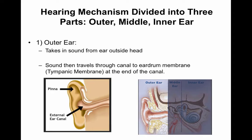The outer ear takes in sound from outside the head. Sound then travels through the ear canal to the eardrum membrane, also known as the tympanic membrane, at the end of the ear canal.